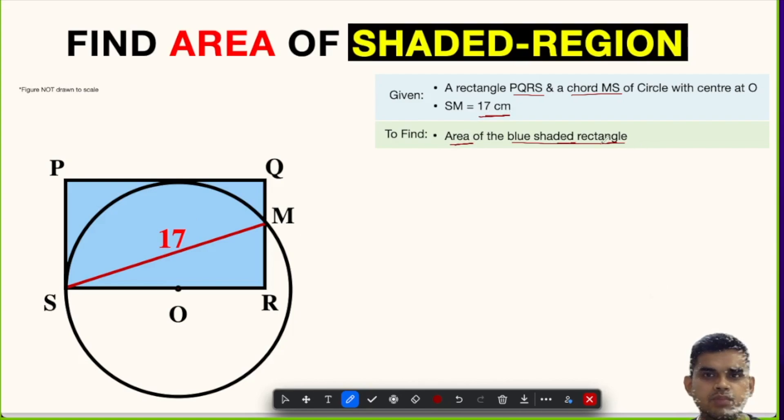The blue shaded region is a rectangle which is given in the question. In order to find the area of a rectangle, we must have its length and width, but here explicitly length and width are not given. So how are we going to solve this? Let's have a look.